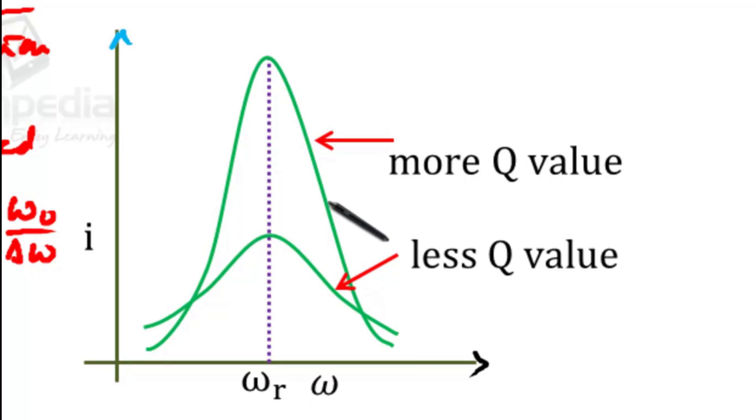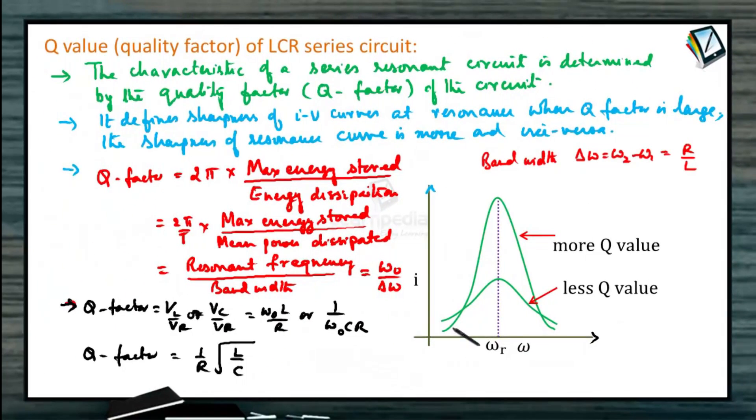So when R tends to 0, Q factor is infinity. R value is low, Q value is large. So as R value increases, Q factor will become less. So Q factor is 1 by R under root of L by C.